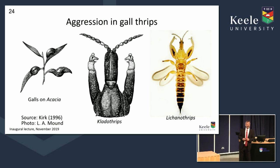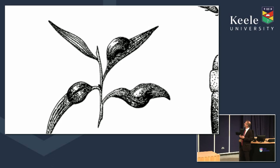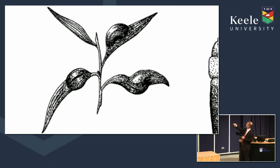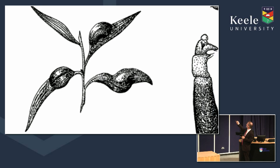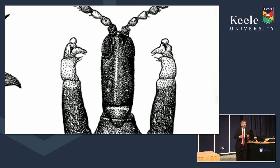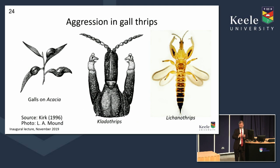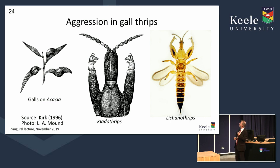On to fighting. Thrips that defend their galls — the adult females of cladothrips and leukanothrips with their dagger-like front legs — fight each other in a quite spectacular and brutal way, like gladiators, because it's life and death. One will defeat the other, take over the gall, and the other will likely have no offspring as a result. We see this aggression in these acacia thrips in Australia.